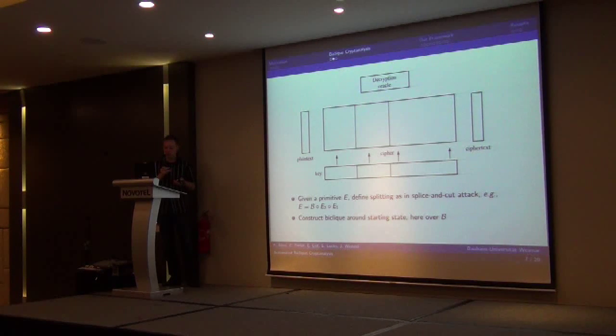For instance, we can say we define splitting over a primitive E into E1, E2, and not-cut E. Like initial structures, bicliques are constructed just for a certain number of steps around the starting state, which we say here is not-cut E.